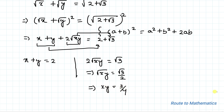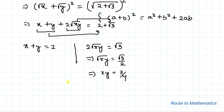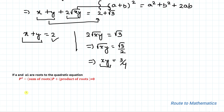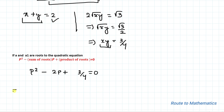Now we apply the condition: if a and a₁ are the roots of a quadratic equation p² − (sum of roots)p + (product of roots) = 0. Considering x and y as the roots, the sum of roots is 2 and the product is 3/4. Substituting these values, we get p² − 2p + 3/4 = 0.